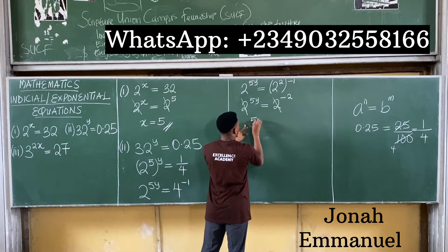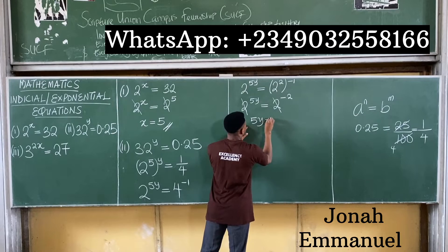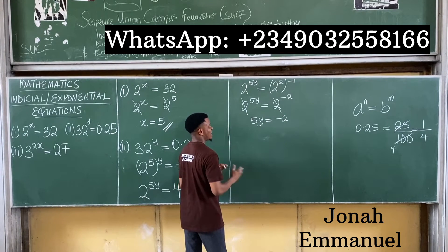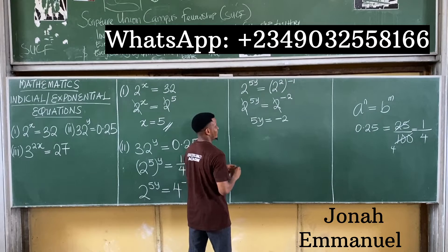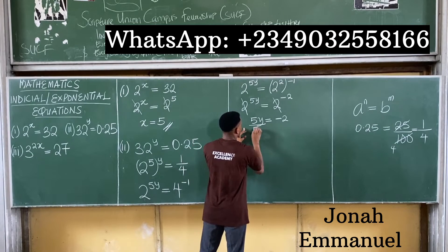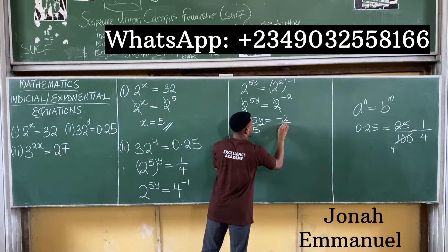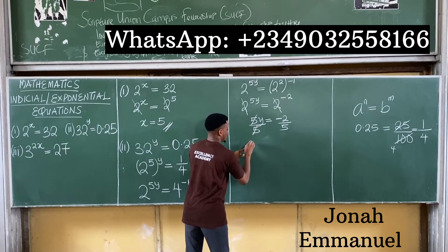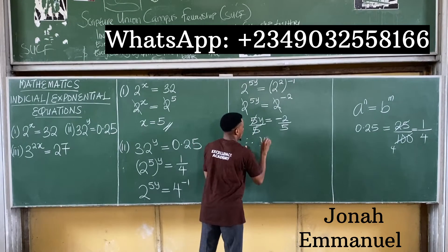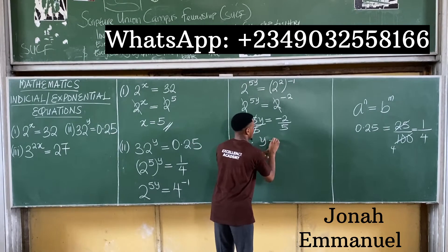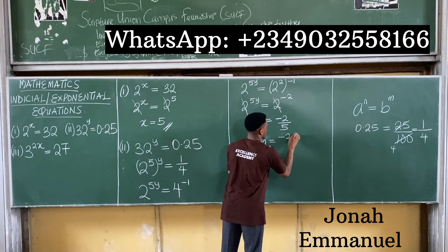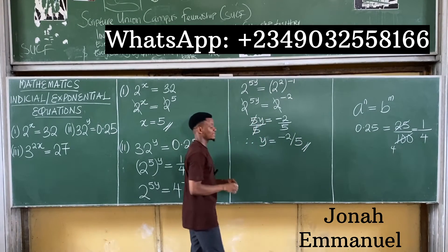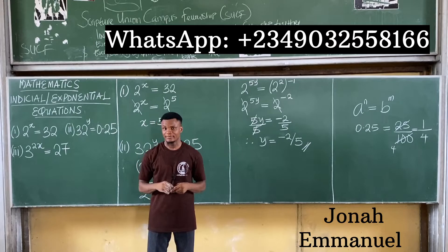I have that 5y is equal to minus 2. To get y, I'll divide both sides by 5. This cancels this, so therefore y is equal to minus 2 over 5. That's the answer.